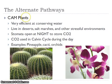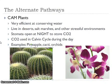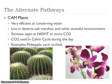The final type is called CAM plants. CAM plants are what we think of when most plants are living in the desert — they are very efficient at conserving water so they can live in really stressful environments like deserts and salt marshes. They do this by opening their stomata at night, which is unique: C3 and C4 plants open their stomata during the day when light's out. By opening stomata at night, CAM plants take in CO2 and store it in their leaves, then during the day they run the Calvin cycle to turn it into glucose. Examples include pineapple, cacti, and orchids.